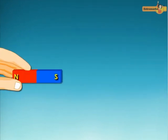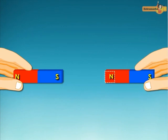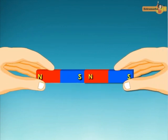Similarly, if we bring the South Pole of one magnet close to the North Pole of another magnet, then again the two opposite poles attract each other.